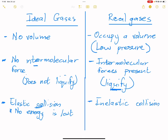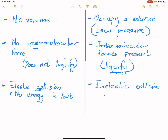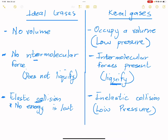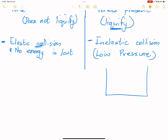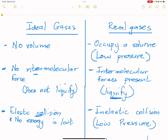So how can we get the real gas to behave more ideally under these conditions? We simply put it under low pressure again. At low pressure, the molecules are as spaced out as possible — they are far away from each other. As a result, they do not collide very frequently. So those are the conditions and properties of an ideal gas versus those of a real gas.